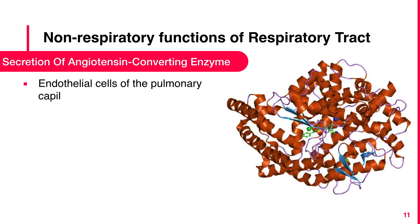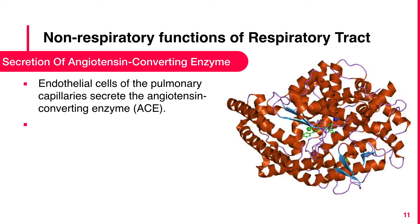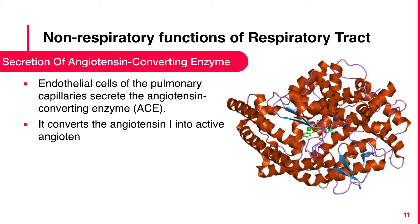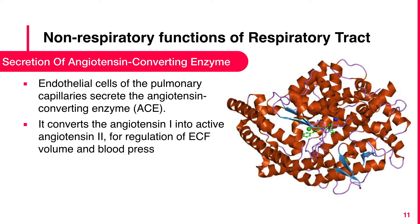Secretion of angiotensin-converting enzyme: Endothelial cells of the pulmonary capillaries secrete the angiotensin-converting enzyme ACE. It converts angiotensin-1 into active angiotensin-2 for regulation of ECF volume and blood pressure.